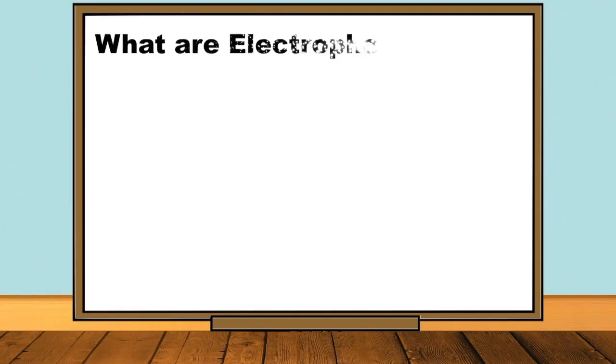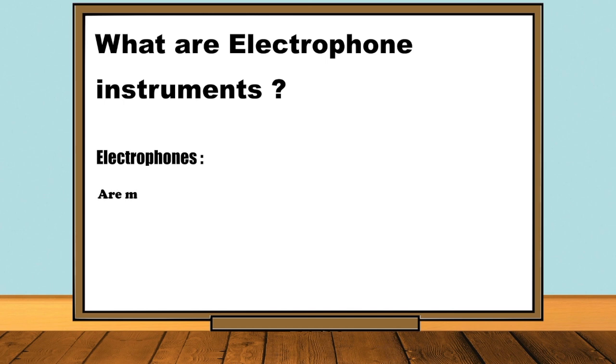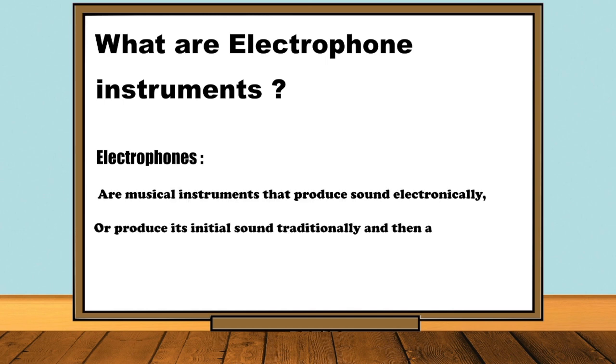What are Electrophone Instruments? Electrophones are musical instruments that produce sounds electronically or produce its initial sound traditionally and then amplified electrically.